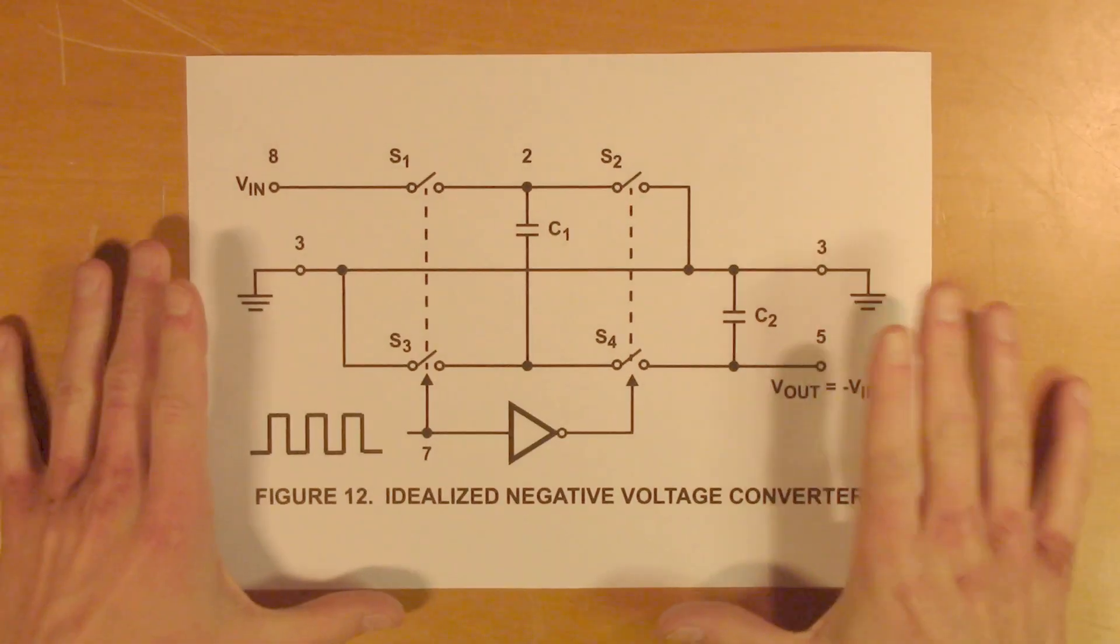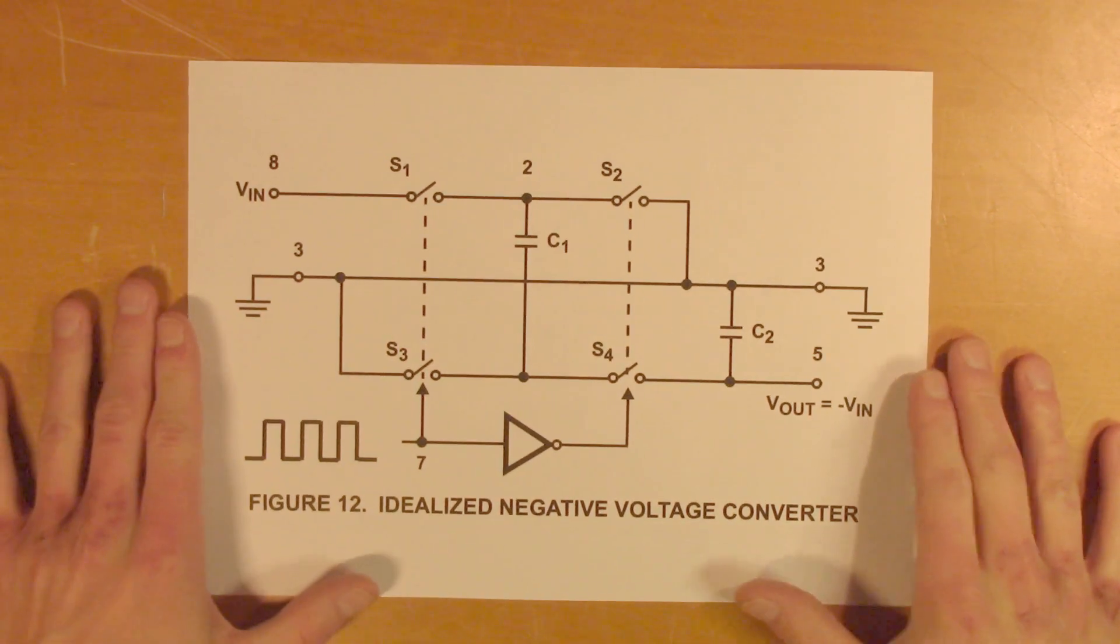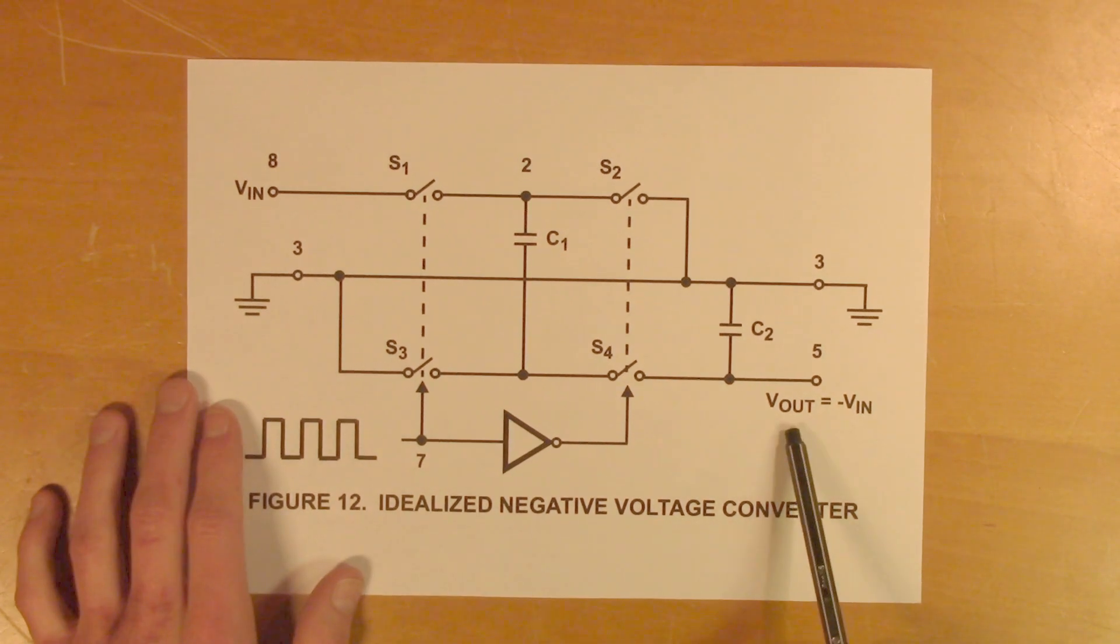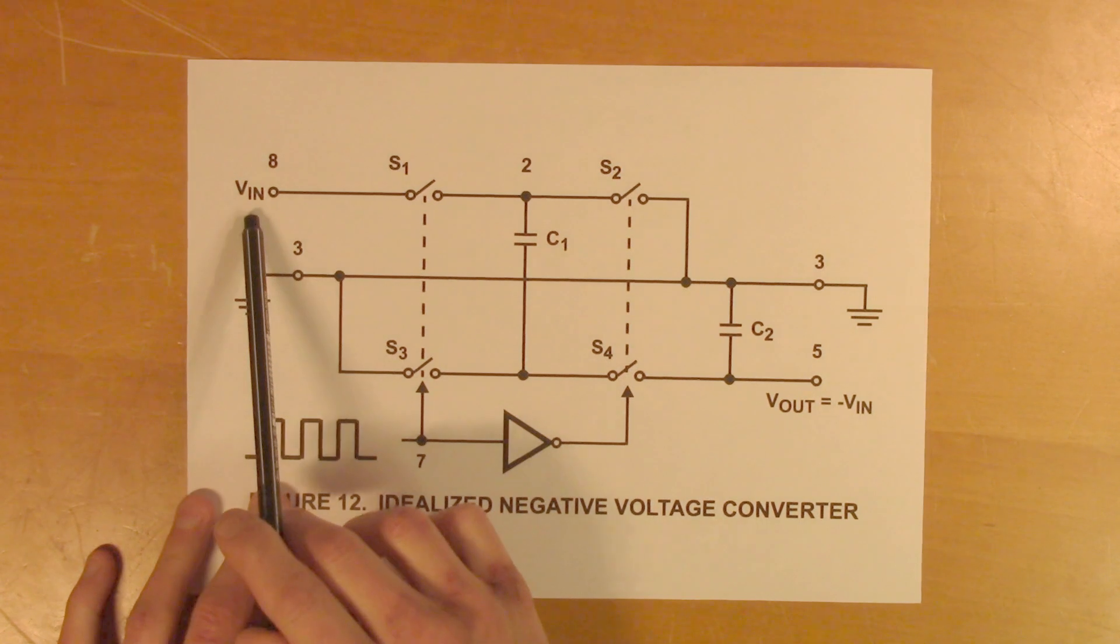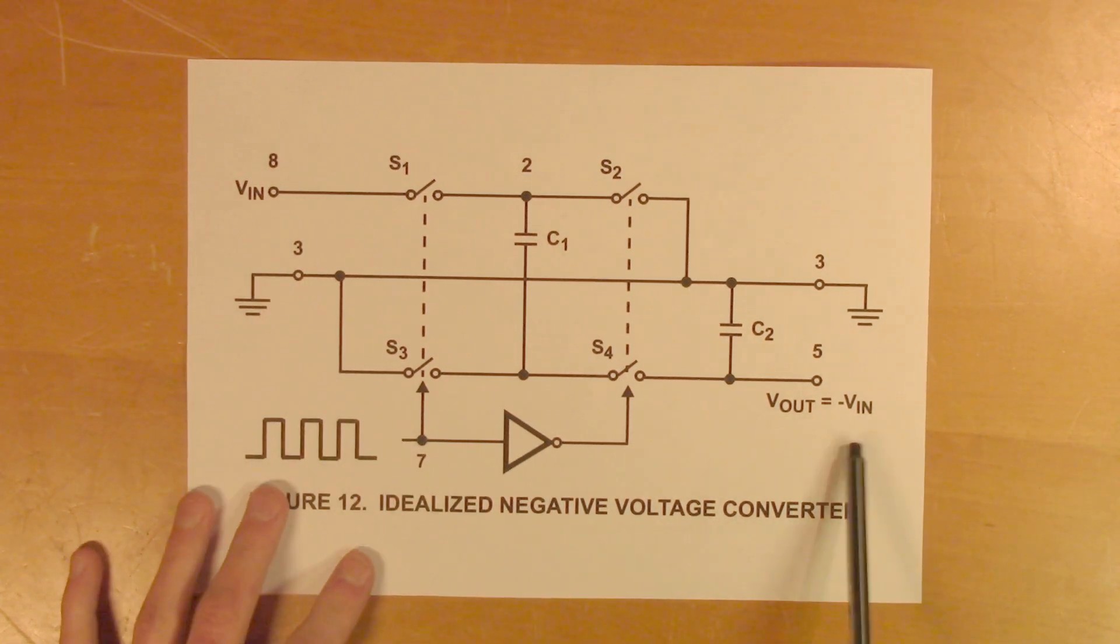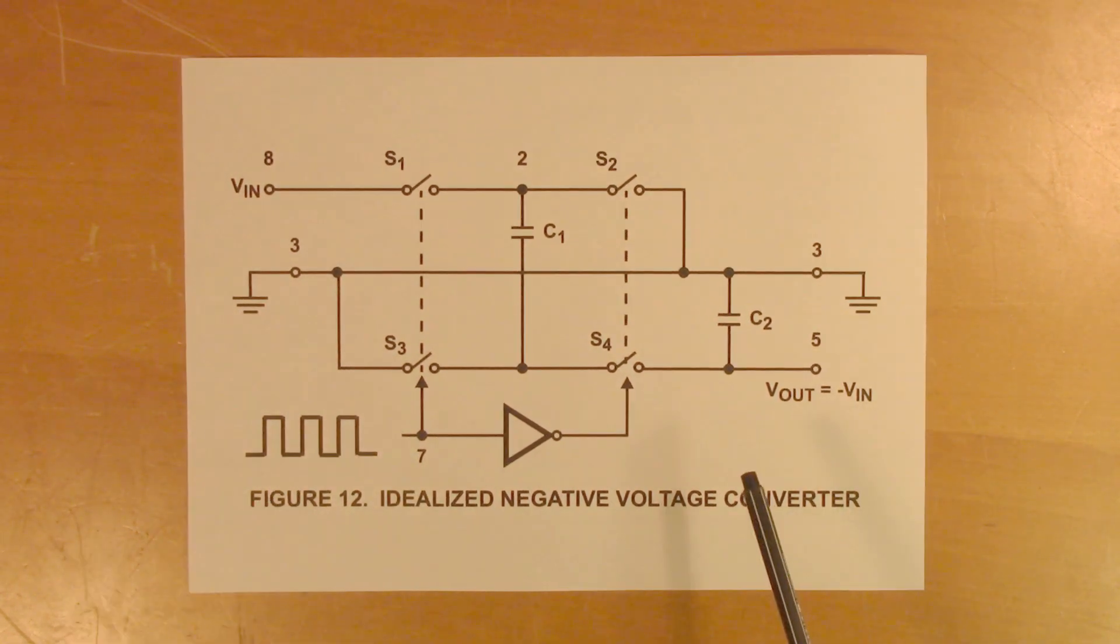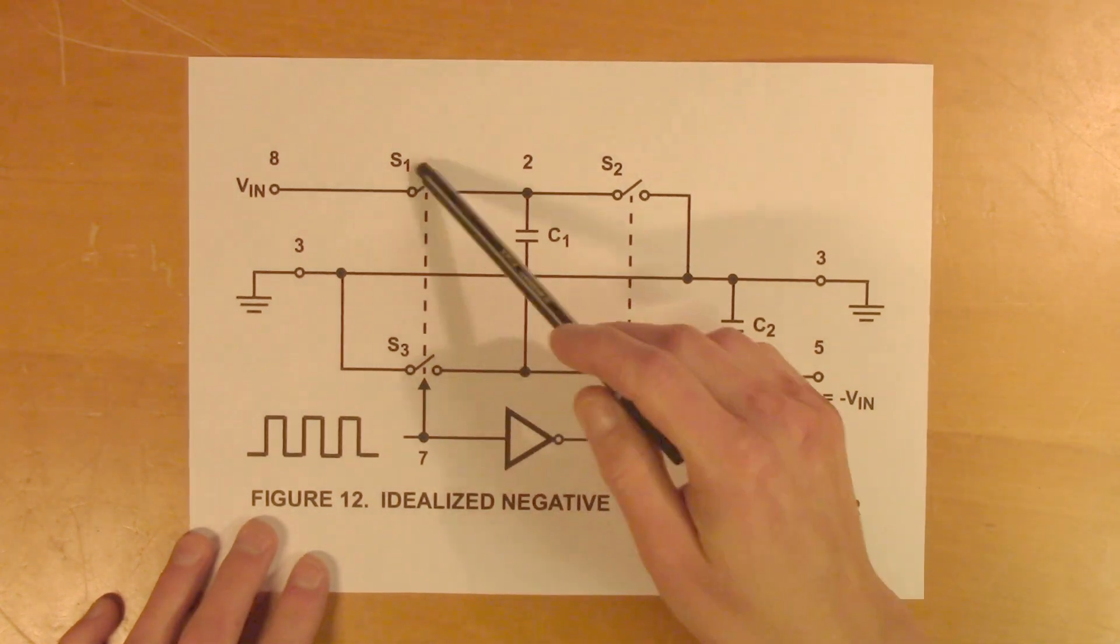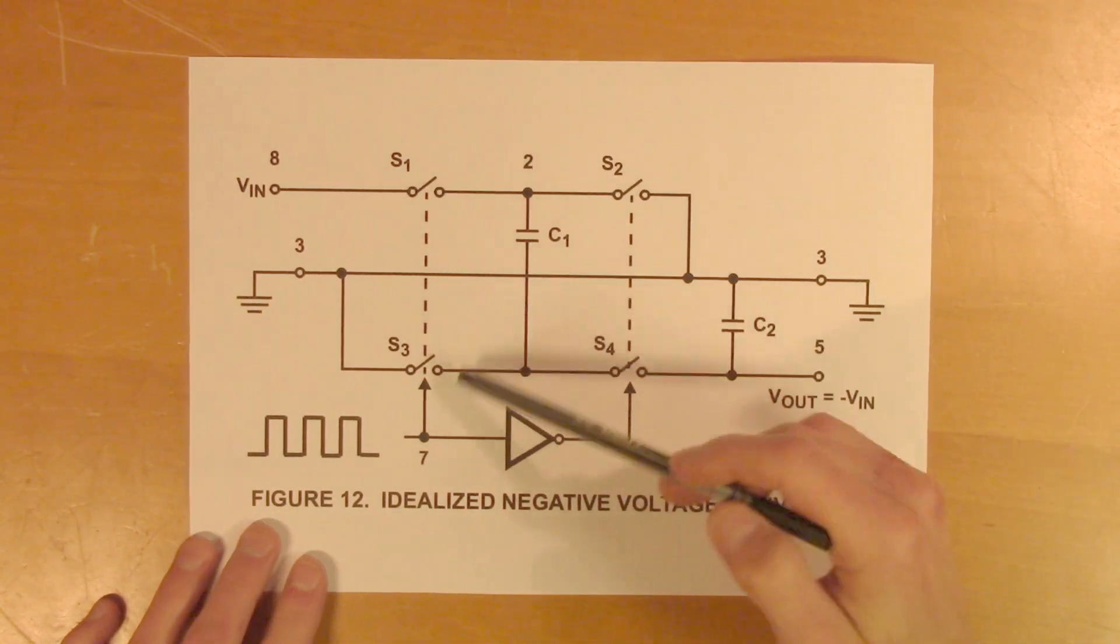So this is the circuit design of the charge pump simplified. We can see that we have a voltage input that's supposed to be DC, and we have an output voltage that's supposed to be minus Vin. So let's say you have 5 volts on the input, that means you will get minus 5 volts on the output. So this circuit uses a control signal that is generated internally using an internal oscillator, and it tells these switches to either open or close.